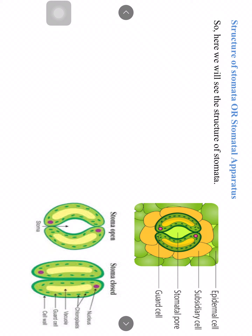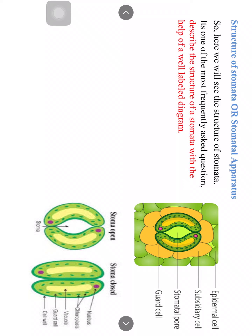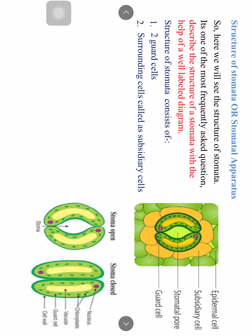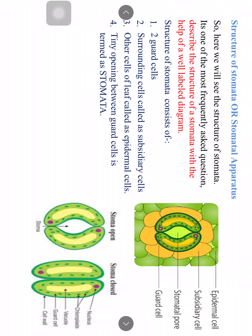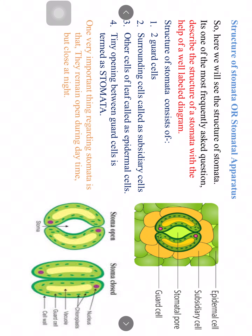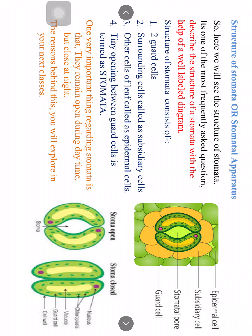The structure of stomata consists of two guard cells — curved, kidney-bean shaped cells — surrounding cells called subsidiary cells, and other leaf cells called epidermal cells, with a tiny opening between the guard cells called the stomatal pore. Stomata remain open during daytime and closed at night. The reasons behind this will be studied in higher classes.